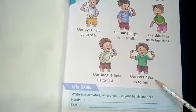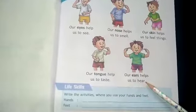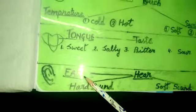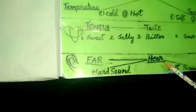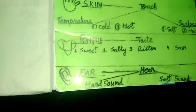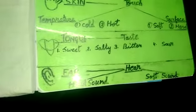Our ears help us to hear. हमारे कान हमें सुनने में मदद करते हैं. The function of ear is to hear. हम कई तरह की आवाज़ें सुनते हैं. We hear different types of sounds: hard sound and soft sound. Children, just listen to the hard sound — this is the hard sound. But soft sound? When you speak in your mom's ear slowly: 'Mom, I don't want to go to school today.' This is a soft sound.